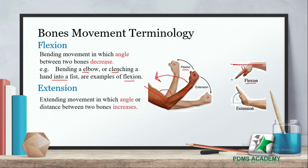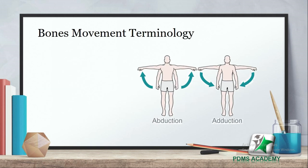Extension: the extending movement in which the angle or distance between two bones increases. For example، elbow joint میں جب arm extend ہوتی ہے تو humerus اور radius/ulna کے درمیان angle بڑھتا ہے — یہ extension کہلاتی ہے۔ ہاتھ کا اوپر کی طرف اٹھنا extension ہے اور clench کرنا flexion ہے۔